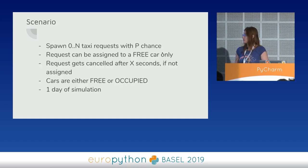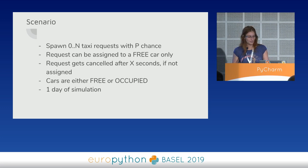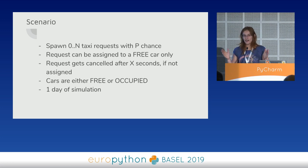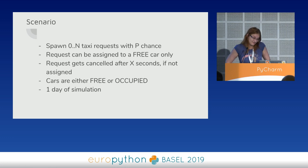Whenever you decide to build something, you need to keep an eye on those four criteria. For this presentation I chose a scenario similar to my work: we're going to simulate the dispatch of a taxi to a customer request. We'll have a world that can spawn requests with a certain chance, with a maximum of N active requests — meaning at most a thousand passengers using the app, one request per passenger at a time. Requests can only be assigned to a free car.